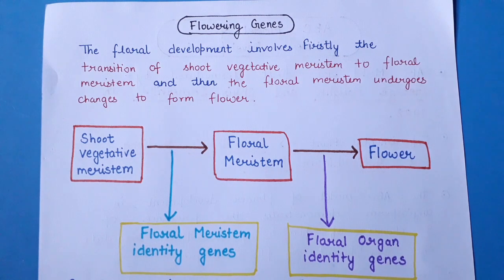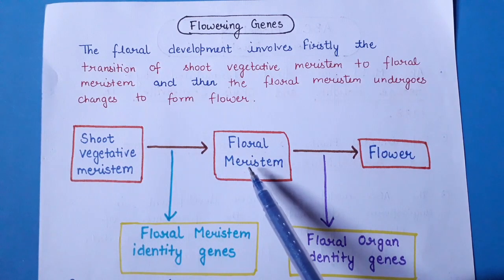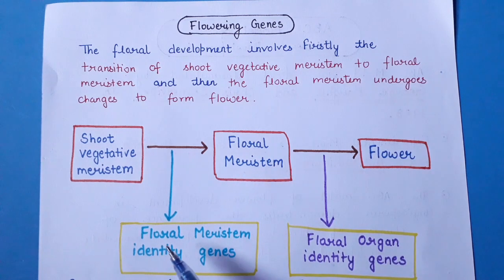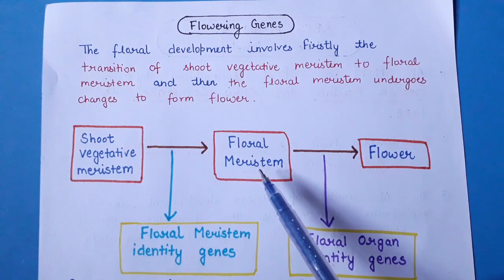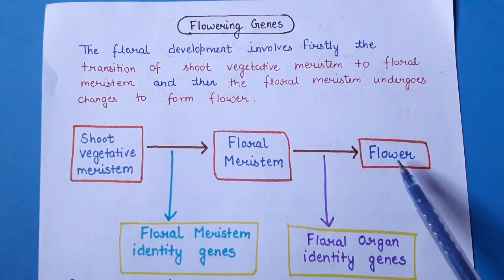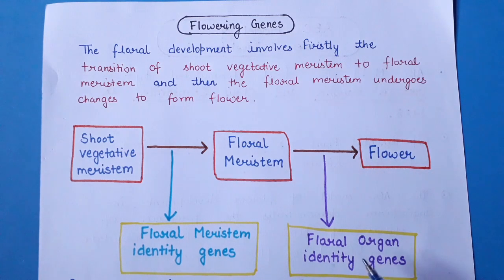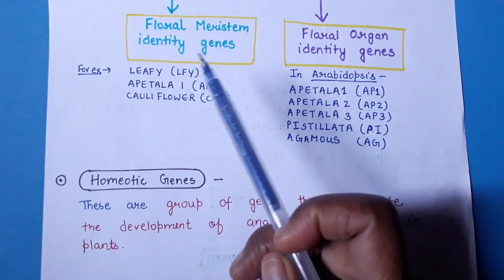Before discussing those models, we need knowledge about flowering genes. There is a shoot vegetative meristem that undergoes a transition into a floral meristem, and this transition requires a set of genes called floral meristem identity genes. The floral meristem then undergoes a transition into a flower consisting of certain whorls, which requires another group of genes called floral organ identity genes.